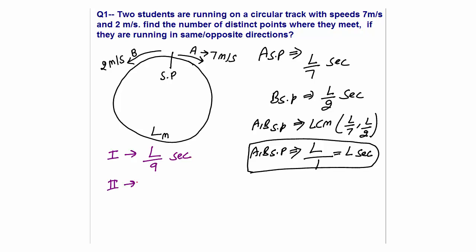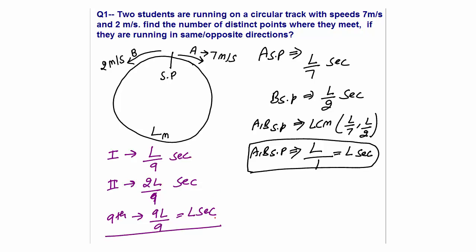The second meeting will again be after L/9 seconds, so at 2L/9 seconds, and so on. The third meeting will take place at 3L/9 seconds. By common sense, the ninth meeting will take place at 9L/9, that is at L seconds. We have just shown that at L seconds they are meeting at the starting point, so the ninth meeting will take place at the starting point.